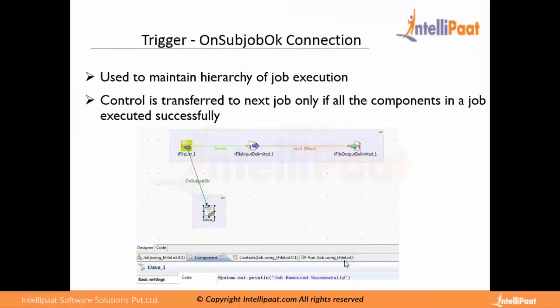So triggers — as I've told you, triggers are not used to transfer data, but are normally used to maintain the hierarchy of your job execution. By hierarchy I mean, for example, if you have two sub jobs, the second sub job should run only when the first job is successful. In that scenario you use triggers. The first and most basic trigger is the On Sub Job OK connection.